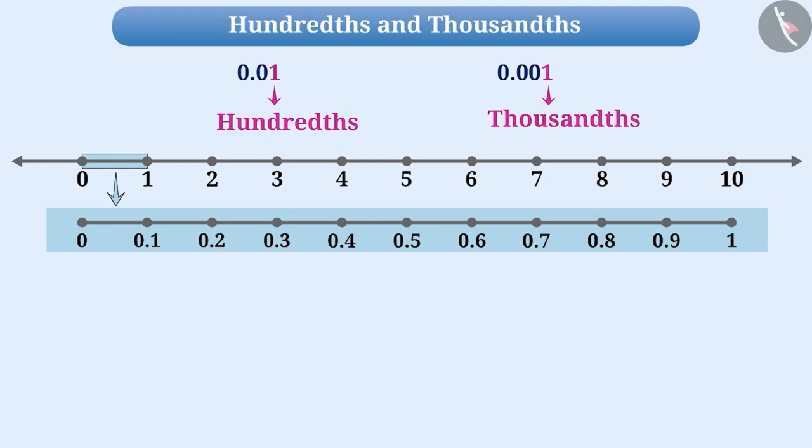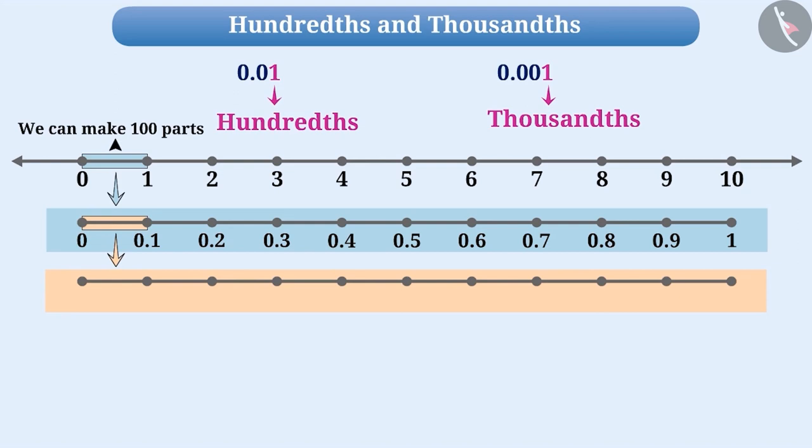if we again zoom in on the number line, we can divide the distance between 0 and 0.1 into 10 equal parts. This way, we can divide the distance between 0 and 1 into a total of hundred parts. With the help of this,